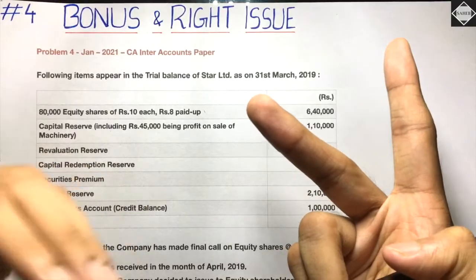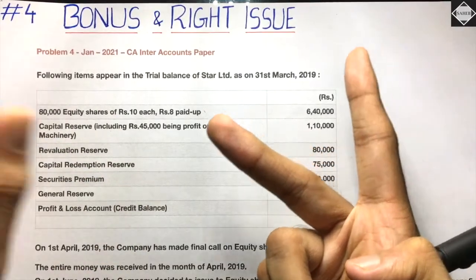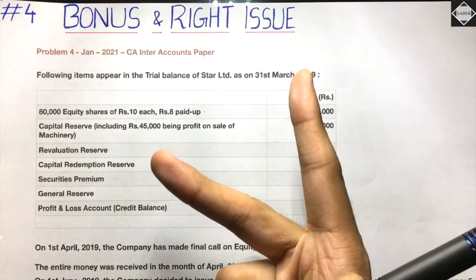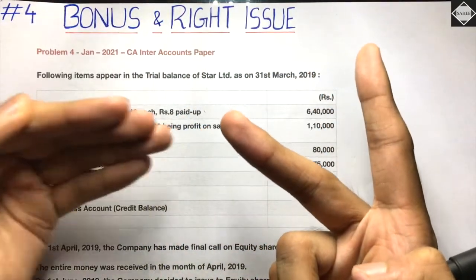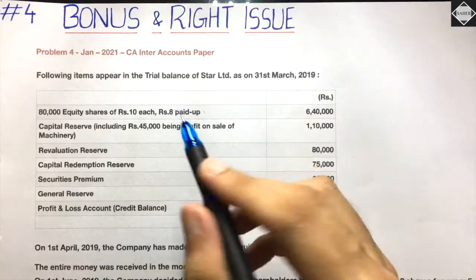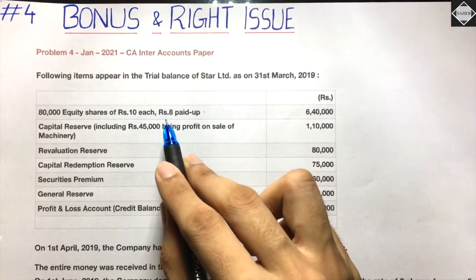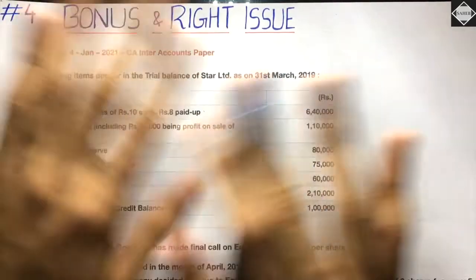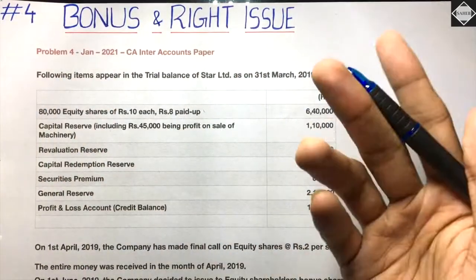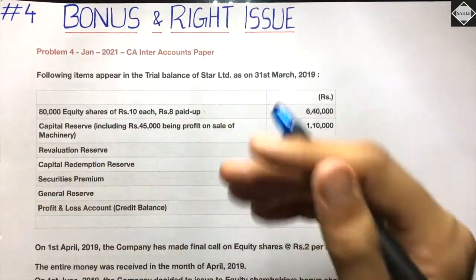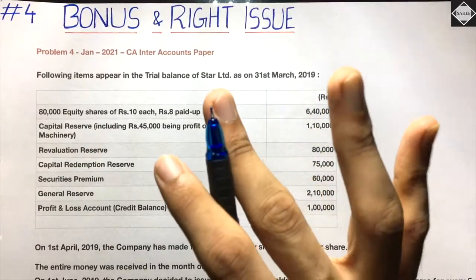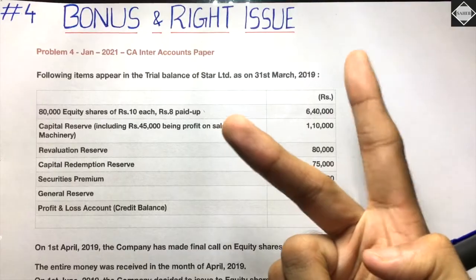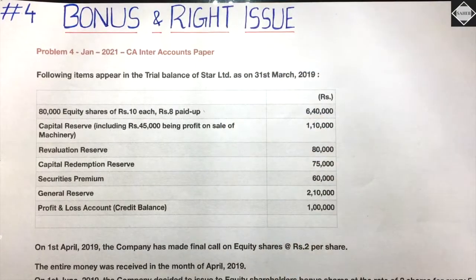There can be two things that happen in the question. The first is the company makes a final call, receives all the money, makes shares fully paid up, and then goes for issue of fully paid up bonus shares. The second option is the company goes for a 'bonus call' — converting partly paid up shares into fully paid up without receiving any money from shareholders, by utilizing reserves free of cost. You will come to know which scenario applies after reading the whole question.